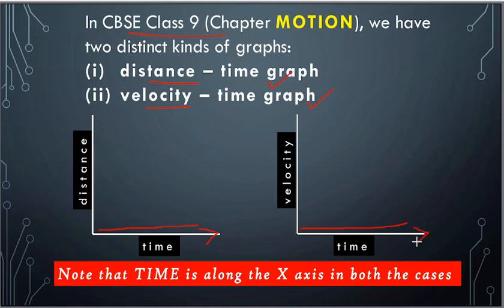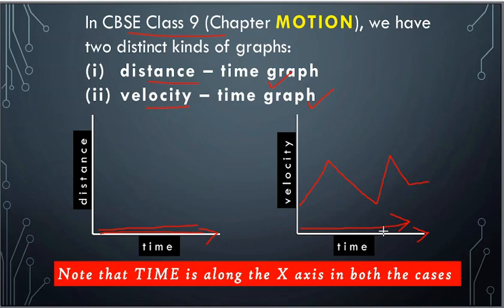The reason time is always on the x-axis is that time is a factor which will always move forward — it will never go back. Velocity can increase, decrease, or remain stationary. But time will never go back. From 5 o'clock you will never get 3 o'clock; after 5 o'clock you will get 7 o'clock. Time will never come back. So time will always be on the x-axis and distance or velocity will be on the y-axis.